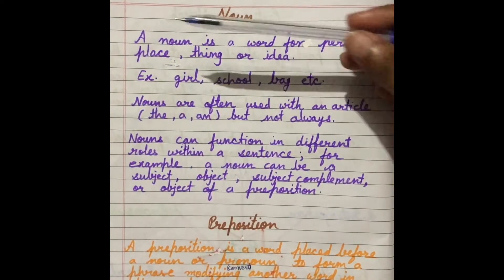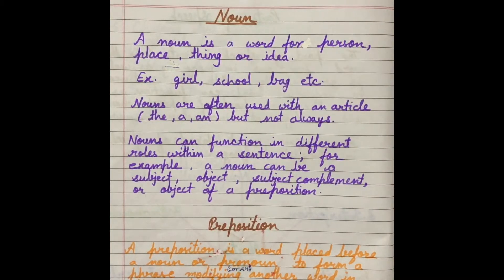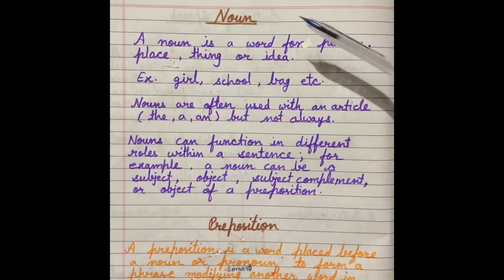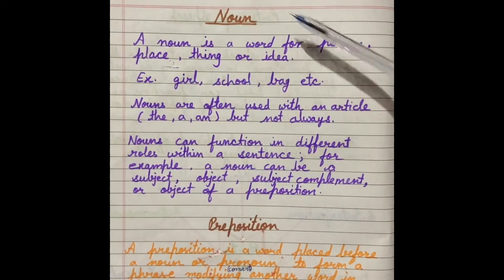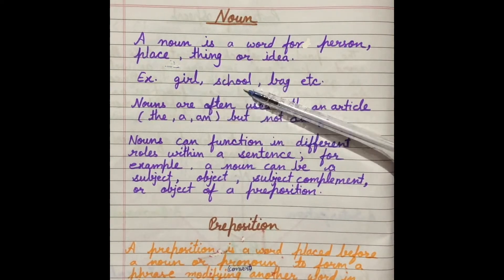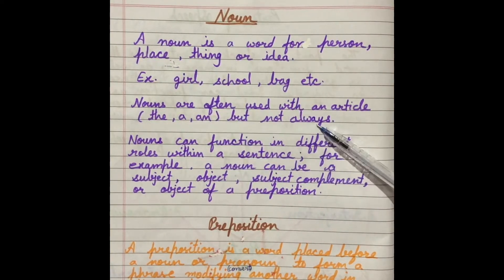First, noun. A noun is a word for a person, place, thing, or idea. As you all know, everything that we can see around us — all things — are nouns. According to the definition, person, place, thing, or idea — these are called nouns. For example: girl, school, bag, etc. Nouns are often used with an article, but not always.